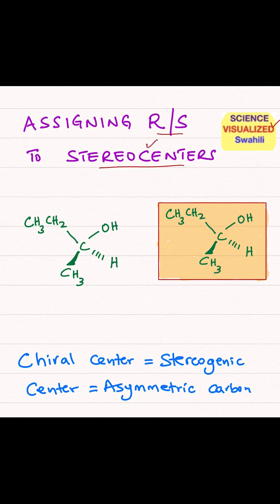So what's a stereocenter? A stereocenter is also called a chiral center, a stereogenic center, or an asymmetric center or asymmetric carbon. This basically means a carbon that's connected to four different groups.